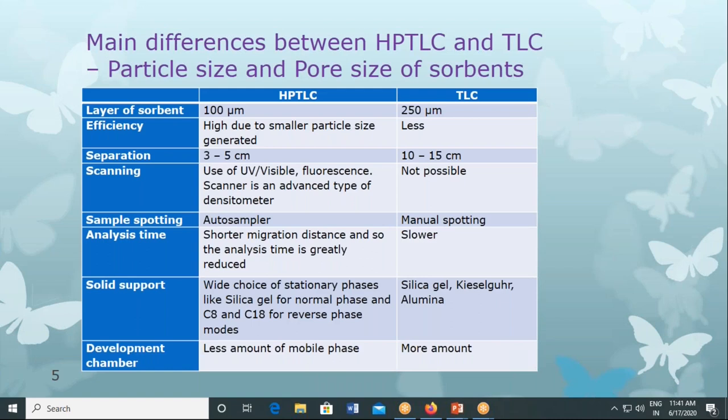In the case of TLC, it is not possible to scan, so you would do manual detection and visualization. For sample spotting, HPTLC uses an auto sampler whereas TLC uses manual spotting. With an auto sampler, reproducibility is much better. With manual spotting, reproducibility varies because each time you spot you may apply a different amount or cover a different area. With an auto sampler, the size of the band or spot and the amount transferred onto the plate remain the same, giving better reproducibility.